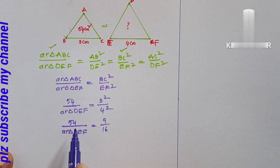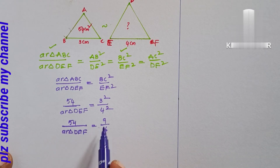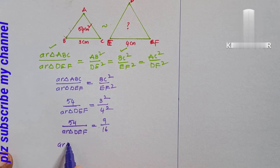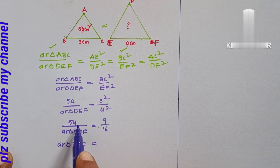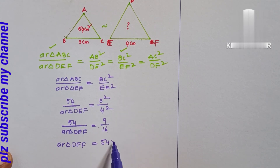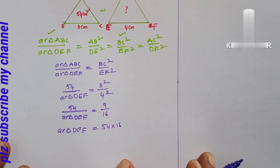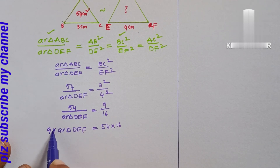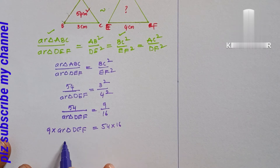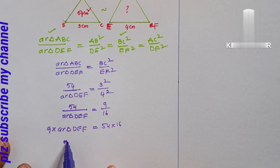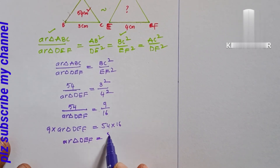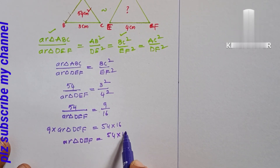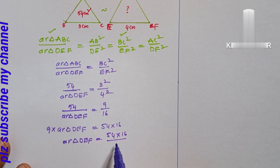Now we do cross multiplication. Area of triangle DEF equals 54 into 16 divided by 9.